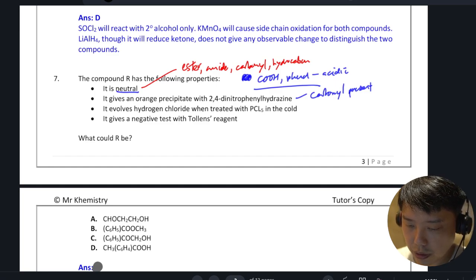Point number three: it evolves HCl when treated with PCl5 in the cold. So basically we are talking about alcohol present or carboxylic acid present.